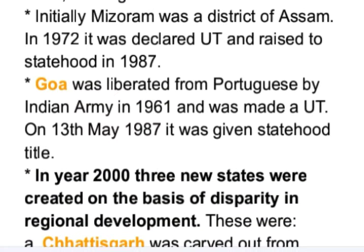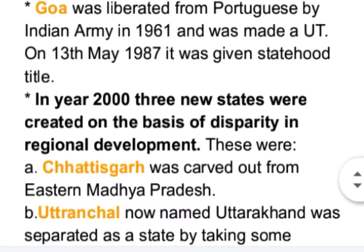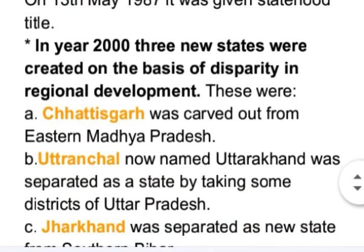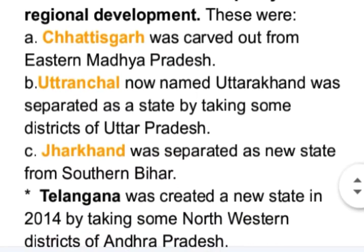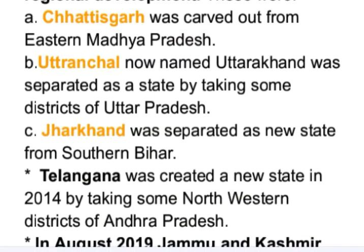Goa was liberated from Portuguese rule by the Indian Army in 1961 and was made a Union Territory; on 30th May 1987 it was given full statehood. In the year 2000, three new states were created on the basis of disparity in regional development: Chhattisgarh was carved out from eastern Madhya Pradesh, Uttaranchal (now named Uttarakhand) was separated by taking some districts of Uttar Pradesh, and Jharkhand was separated as a new state from southern Bihar.